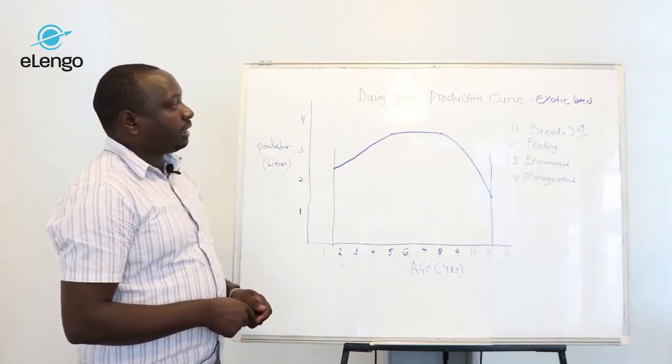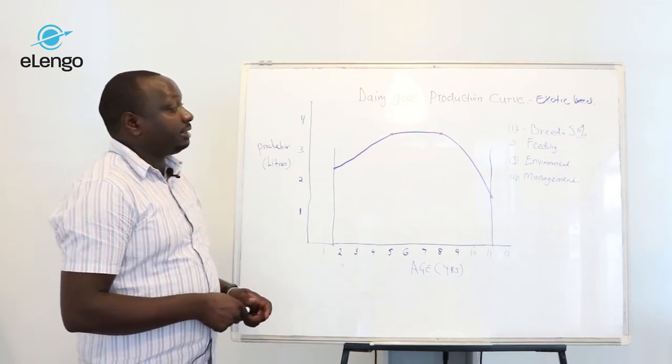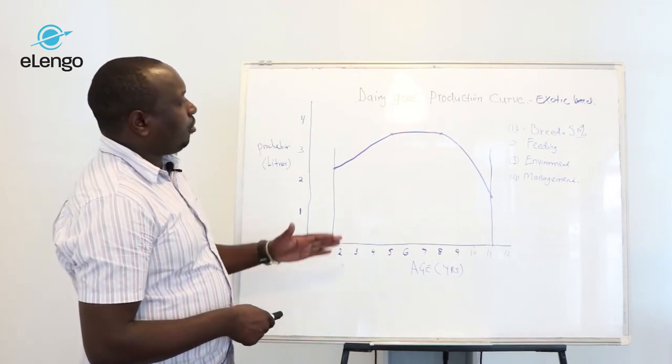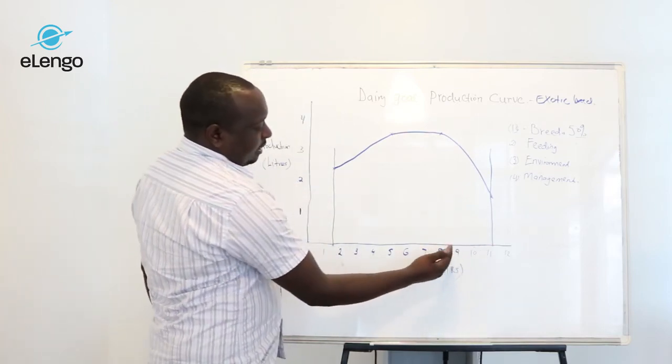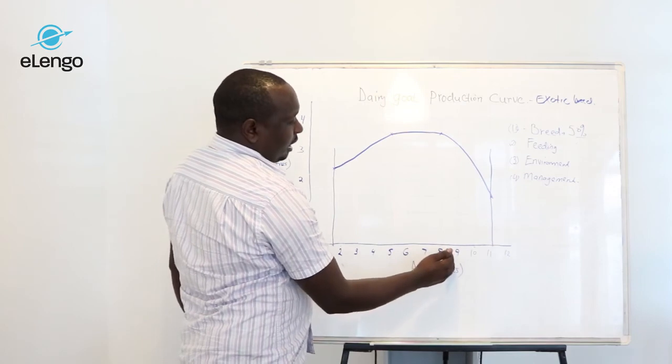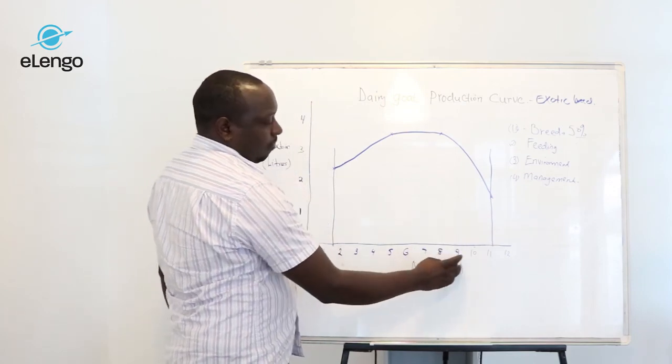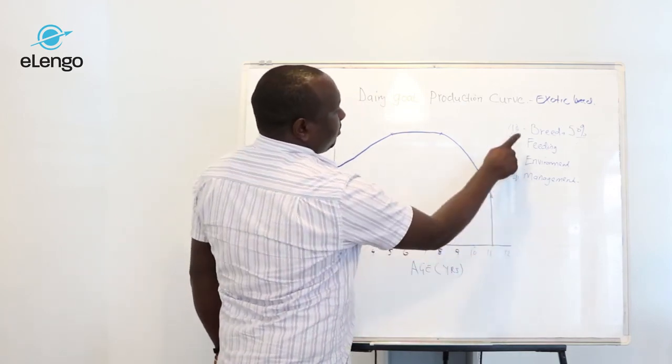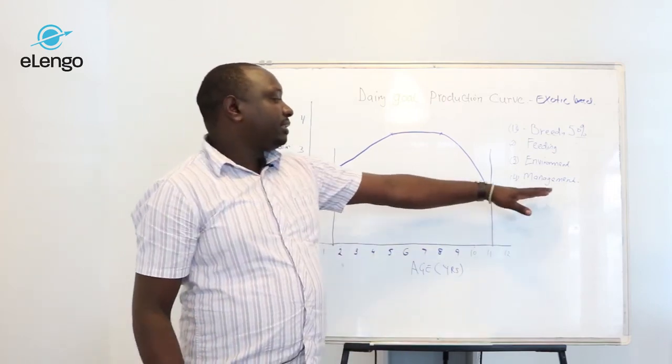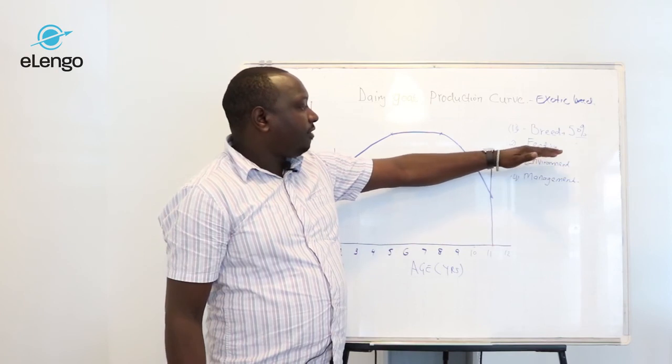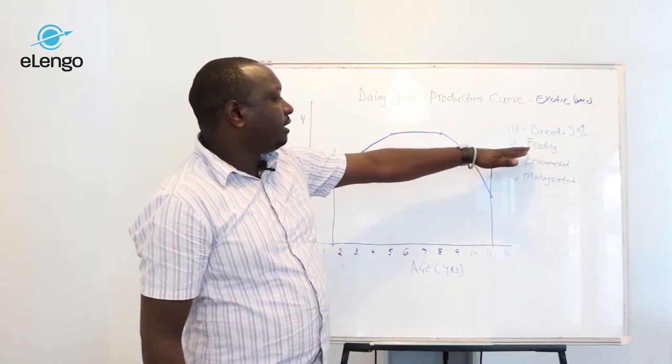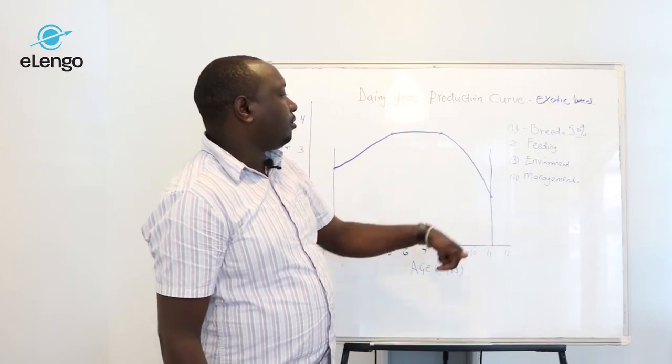For the exotic dairy breeds, the production years might be either less or more. But that depends on the management practices, environment in which that animal is, the feeding regimes and feeding content, and also the breed of the animal.